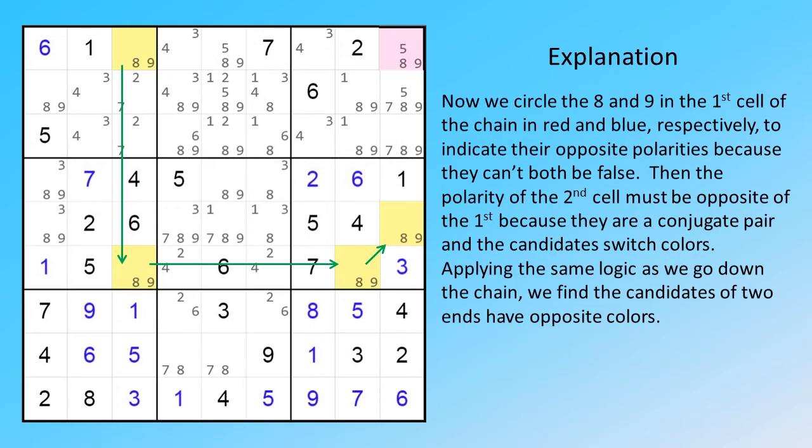Now we circle the eight and nine in the first cell of the chain in red and blue, respectively, to indicate their opposite polarities, because they can't both be false.